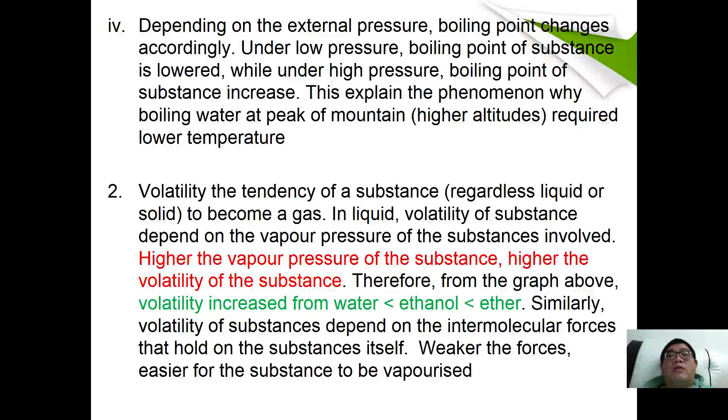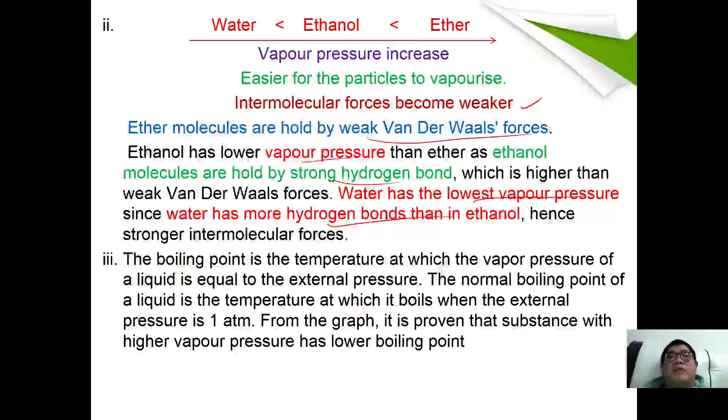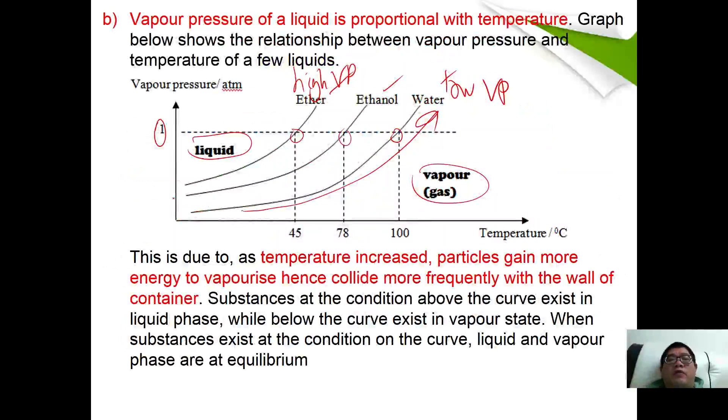Depending on the external pressure, boiling point changes accordingly. Under low pressure, boiling point of the substance is lower. For example, if you have 0.5 atmosphere, it may boil lower than expected. You can see this one, this one, and this one.